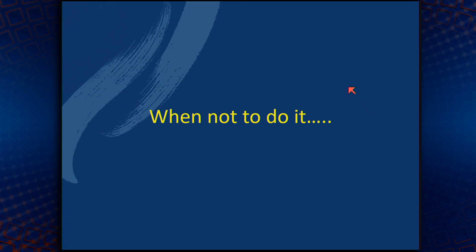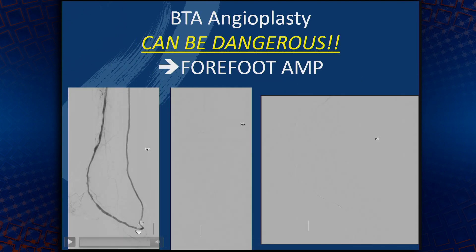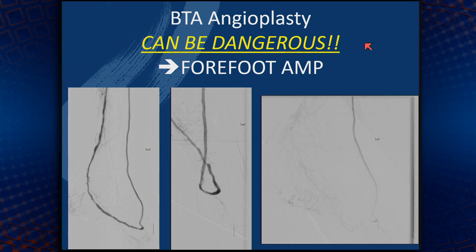When should we not do below-the-ankle angioplasty? A typical patient in our hands — a third toe gangrene — the posterior tibial was crossed and plain balloon angioplasty was done. We subsequently went on to try and open up the anterior tibial and dorsalis pedis to get better flow, and balloon angioplasty of the arch. One problem with balloon angioplasty is you see great reconstruction of the whole arch, but you've actually lost all the tibial digital vessels in the foot — and this patient subsequently ended up with a forefoot amputation.